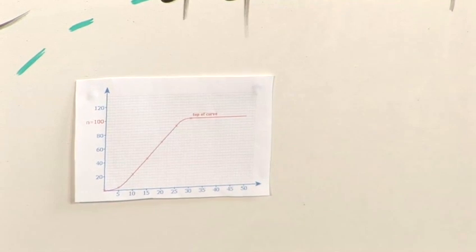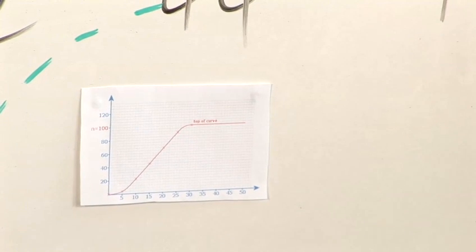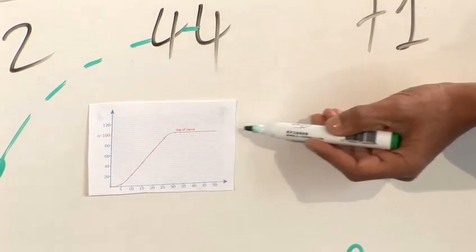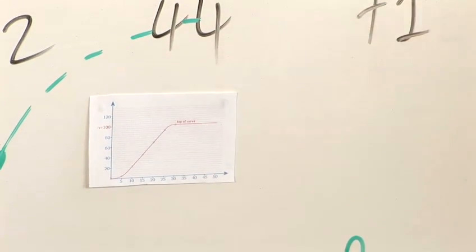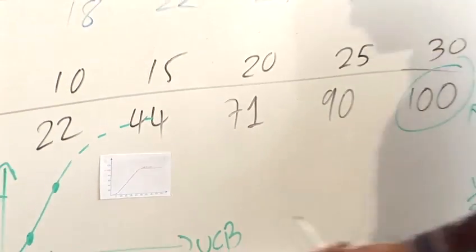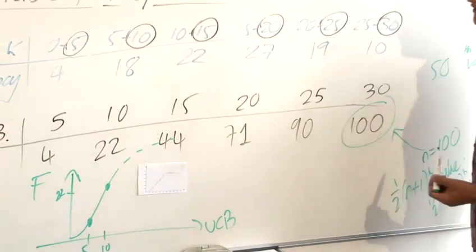Okay, so I've plotted those points and connected them together to form a smooth curve. And the last point is when x is 30, y is 100, which is that point there. And from there, the curve goes flat. So it goes flatter as it reaches the top. And you can see over here, I've written that n is 100 to mark where the curve finishes.